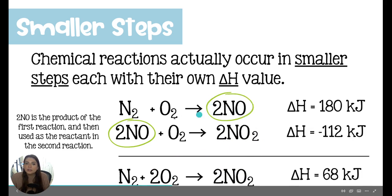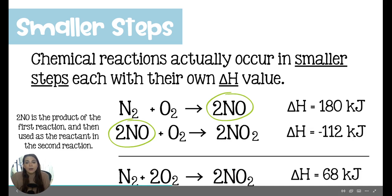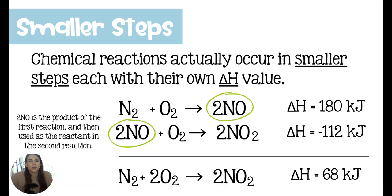And you can see that this in the circle is actually, we call it an intermediate. It's a product in one reaction, and then it's immediately used as a reactant in the second reaction. So it really just gets used up. When we write the whole reaction, we don't even write the NO, and that's because it gets used up entirely in the reaction. It's almost like it never happened.